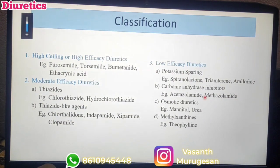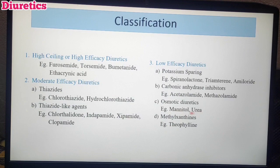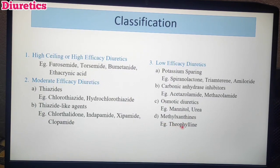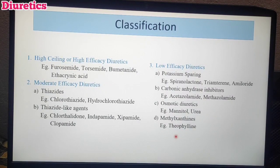Next category: Osmotic Diuretics. Examples are Mannitol and Urea. And the fourth subcategory is Methylxanthines. That is why we use Theophylline — Theophylline is a low-efficacy diuretic. This is all about the classification of diuretics.